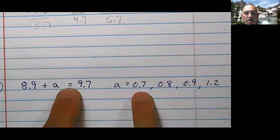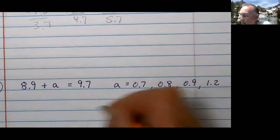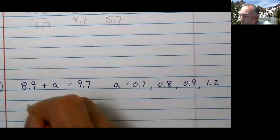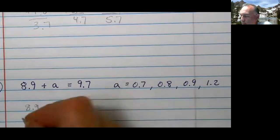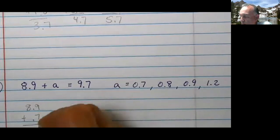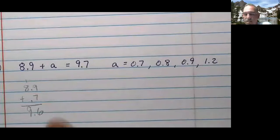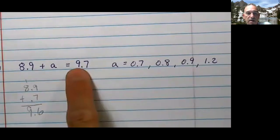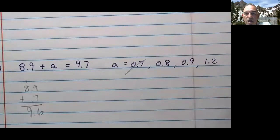So if a equaled 0.7, would this now be an equation? Let's find out. I'm going to pull it right here. 8.9 plus 0.7 equals, let's see. It's 9.6. So does 9.6 equal 9.7? Of course not. That is not a solution.